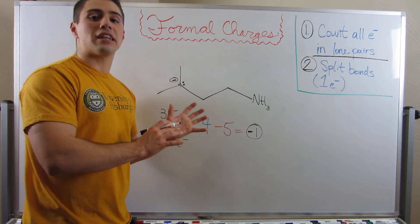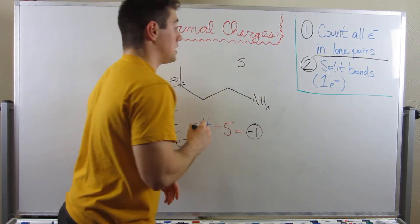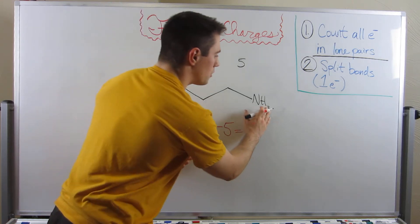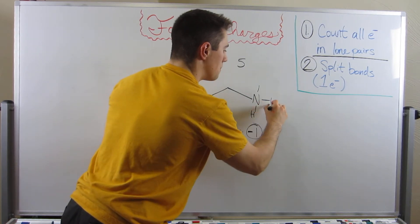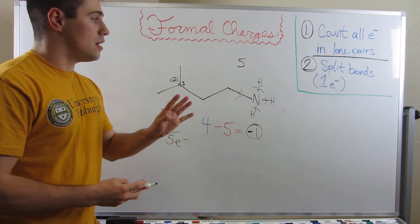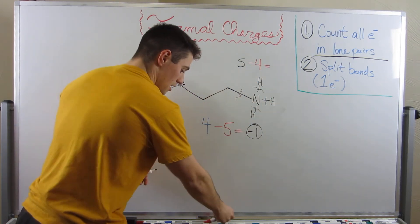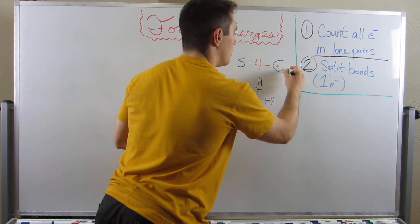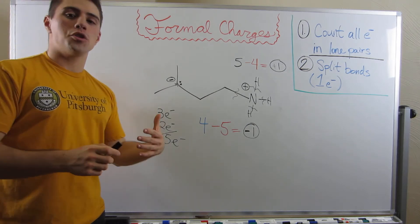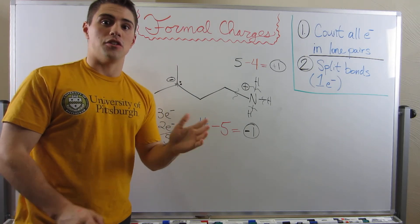Now let's look at this nitrogen. Nitrogen is in the fifth column, so it brings five valence electrons to the table. Expanding the structure shows three hydrogens attached, so nitrogen is part of four bonds total. Splitting four bonds gives four electrons in control. Five minus four equals positive one — so there's a positive one formal charge on nitrogen. Put a little plus in a circle next to nitrogen. As long as you count lone pair electrons individually and split bonds as one each, you're a master at formal charges.